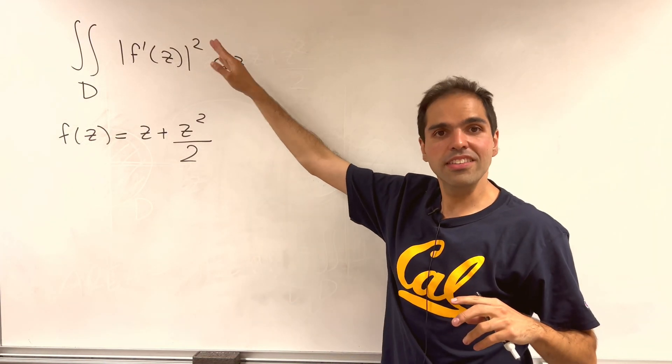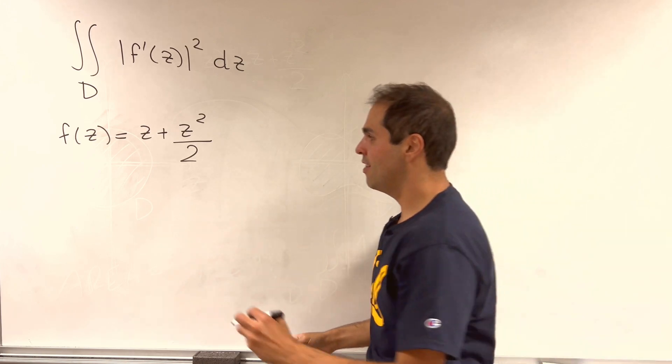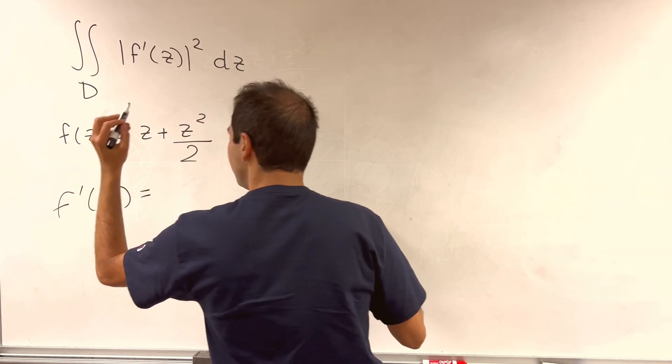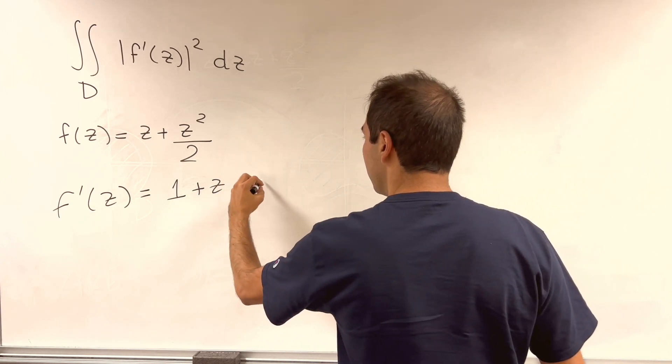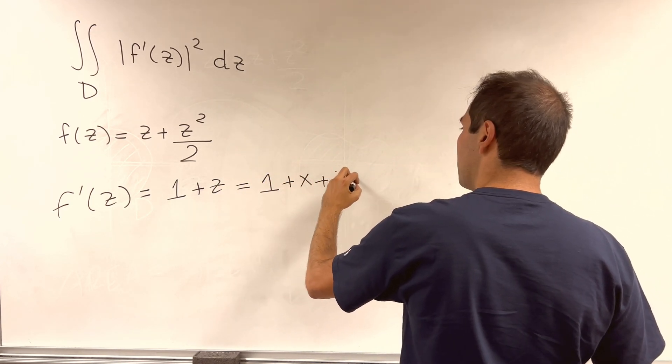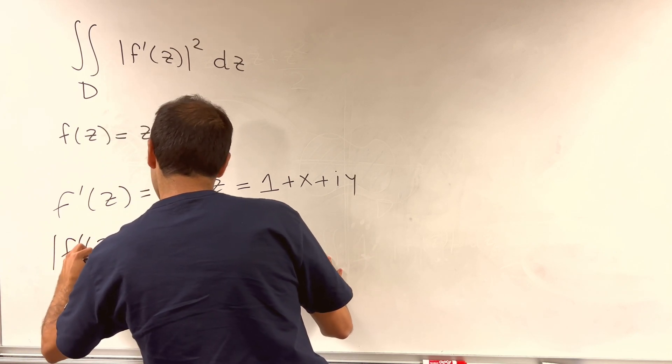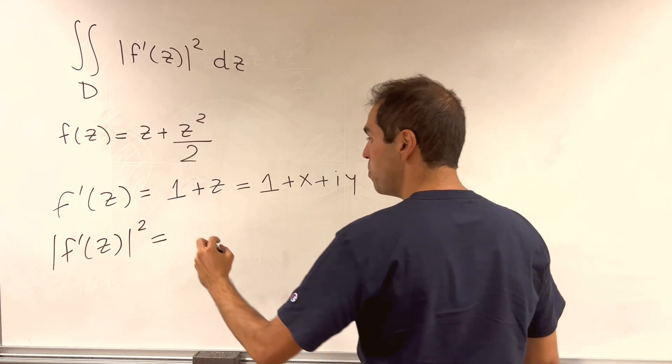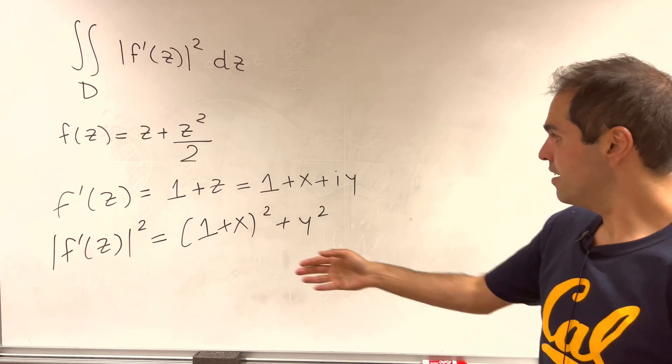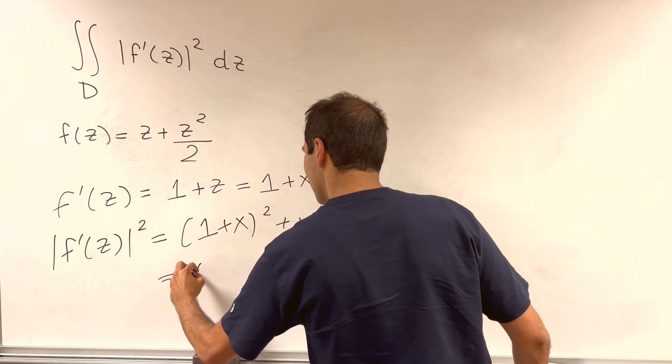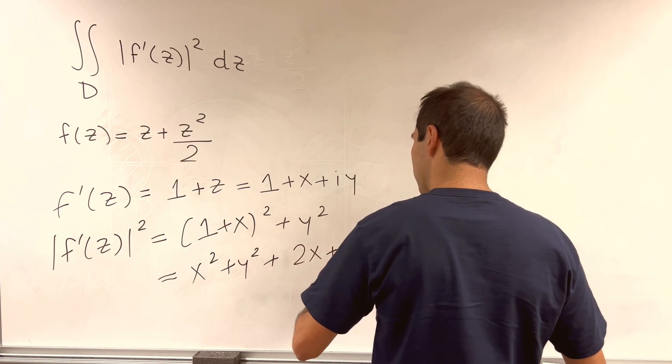So let's calculate the double integral of the absolute value of the derivative squared, where here we have a function. Well, if f of z is that, then f prime of z by the power rule is just 1 plus z, but z is just x plus iy, so it's 1 plus x plus iy, and therefore the modulus squared is just the real part squared. So 1 plus x squared plus the imaginary part squared. And this we can just expand out. So this will be x squared plus y squared plus 2x plus 1.